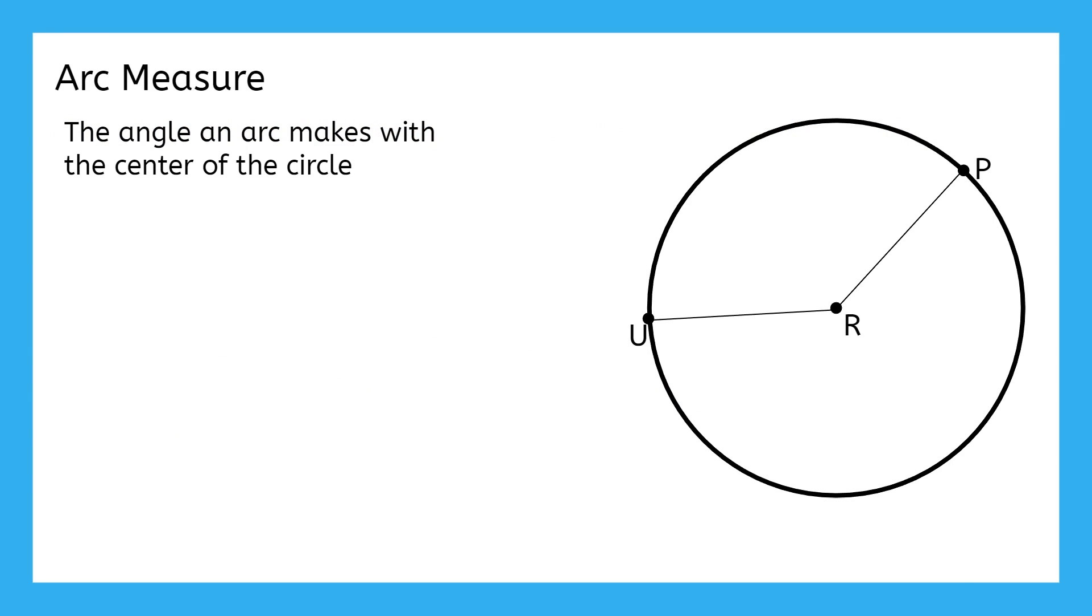Let's start by defining arc measure. Arc measure can be defined as the angle an arc makes with the center of the circle. Remember that an arc is part of the circumference. Let's use arc UP as an example here. Arc UP opens up to angle URP at the center of the circle. According to our definition, this central angle measure is our arc measure too. If the central angle measure is 137 degrees, then the arc measure is also 137 degrees. The arc measure and corresponding central angle measure will always equal each other.